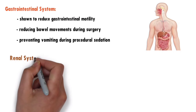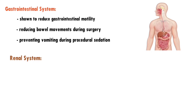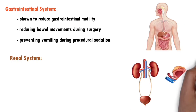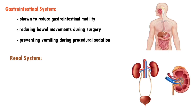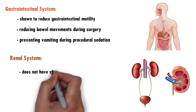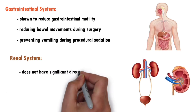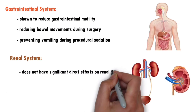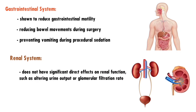Renal system: Dexmedetomidine's impact on the renal system is generally considered neutral. It does not have significant direct effects on renal function, such as altering urine output or glomerular filtration rate. However, dosage and duration of administration should be carefully considered in patients with pre-existing renal impairment.